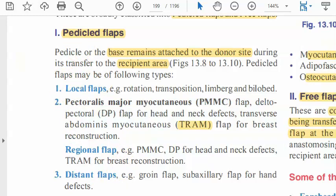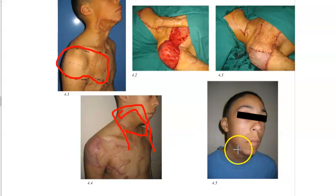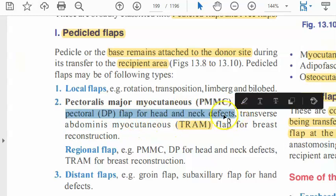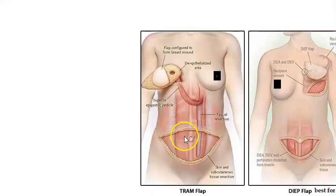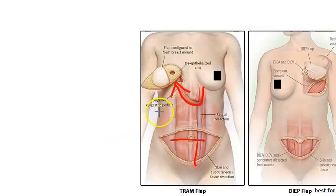The delta pectoral flap is taken and turned to cover the recipient area — it is pedicled. It is used for head and neck defects. The pectoralis major myocutaneous flap is another important pedicled option. The TRAM flap is used for breast reconstruction; it is still pediculated, meaning it remains attached — you can see the connection continuing — though this person can get a hernia from the abdominal donor site.